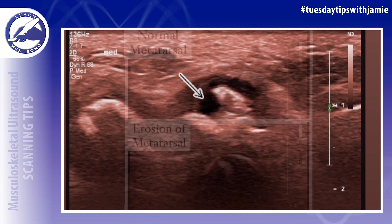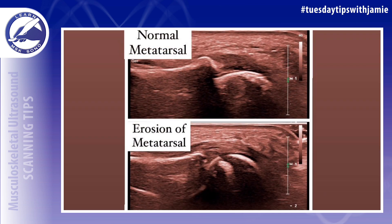In this side-by-side example, you can see what a normal, rounded, smooth metatarsal head looks like at the MTP joint versus one with bony erosions that are eating away at the metatarsal head.